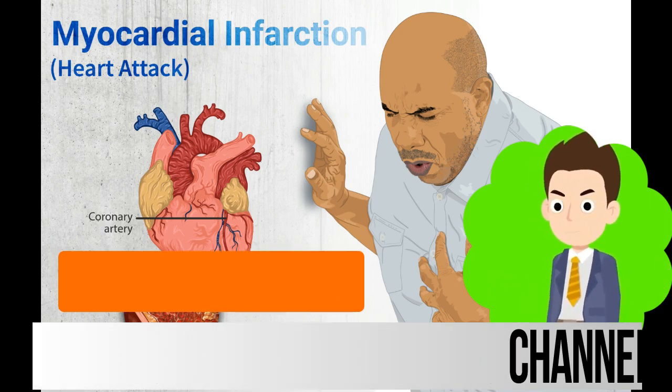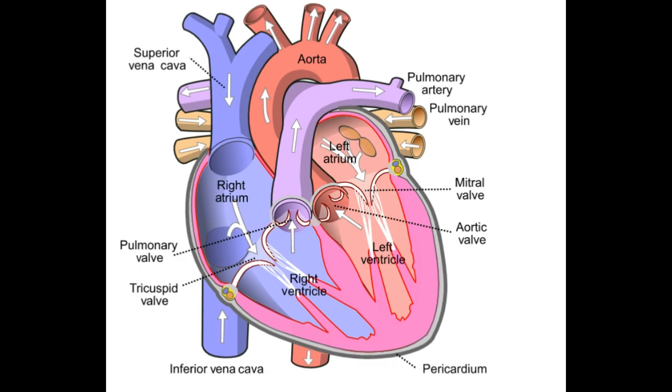Usually, our heart has 4 chambers: right atrium, right ventricle, left atrium, and left ventricle.